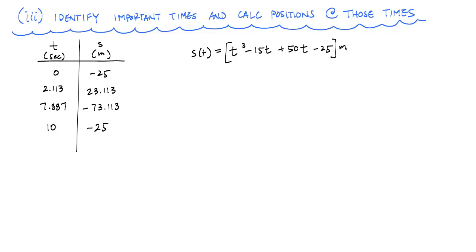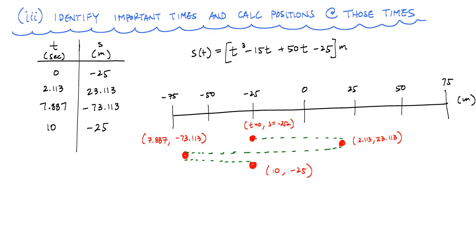The thing I like to do in these problems is make sure I visualize the motion of the particle. I'm going to show you how I use a number line and look at the position, that way it's easy to see what the distances are. At t equals zero, I'm at -25 meters. At t equals 2.113 seconds, I'm at 23.113 meters. Then I'm moving back to the left at -73 meters at 7.89 seconds. At 10 seconds, I'm back at -25 meters.